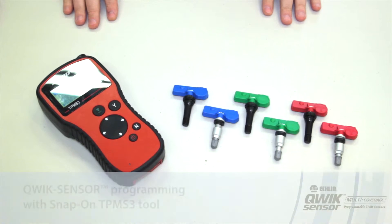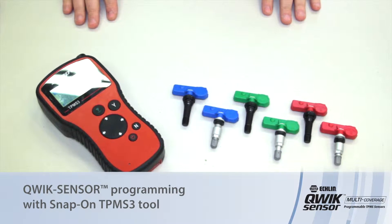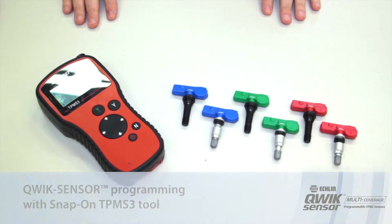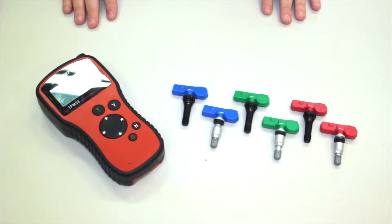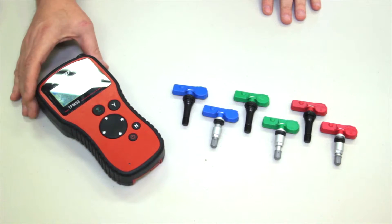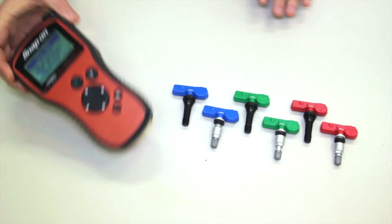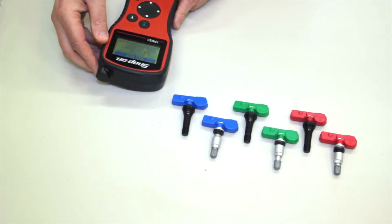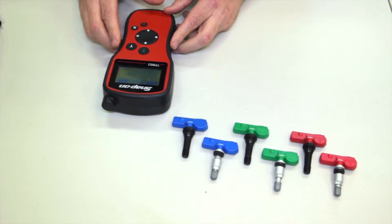Today let's discuss how to program a quick sensor. The quick sensor multi-coverage TPMS sensor is designed to be programmed prior to installation. Using a simple programming tool, you can pick the year, make, and model and have it fit the application that you're working on.